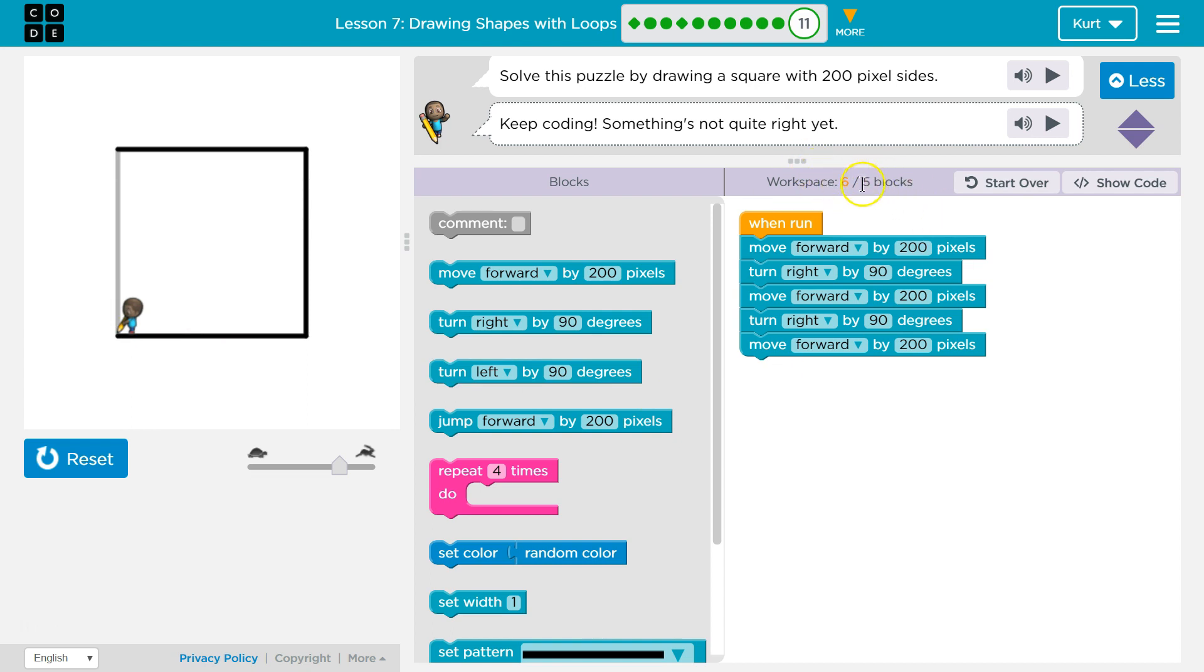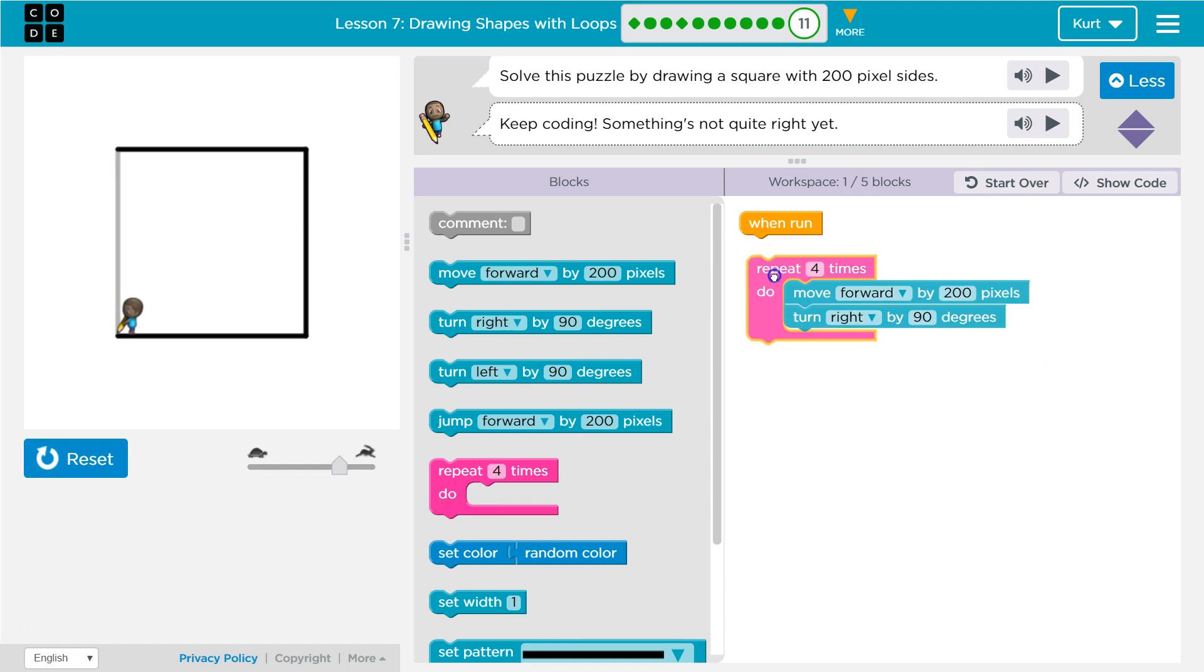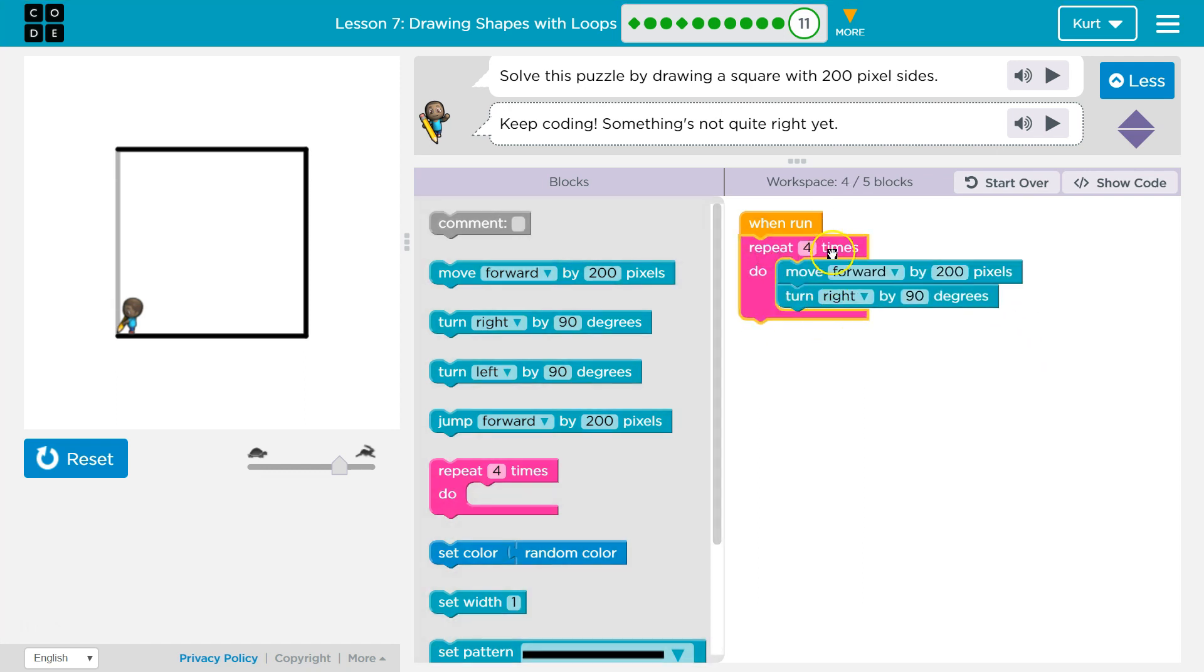But notice that we have 6 chunks of code for our square. So instead of repeating ourselves like we are here, we're saying move forward, go right, move forward, go right. I can get rid of all of this. I can use a repeat block. Anything inside the repeat block will be repeated however many times it says.